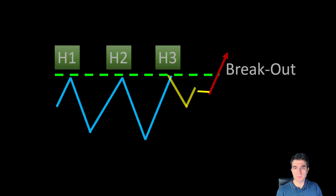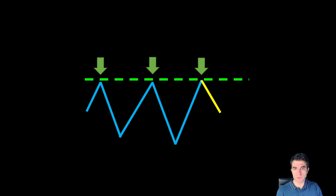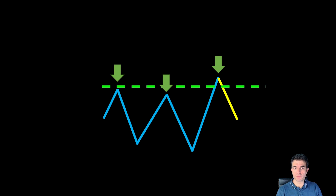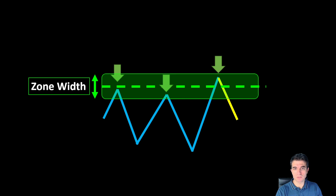The bounces or pivot points of the price don't have to be exactly at the same price level. In fact, it's very rare in reality to have such a perfect alignment. Most of the time the bouncing price will hover around an average key level, a bit above and a bit below, but we can define a key zone instead of an exact level.